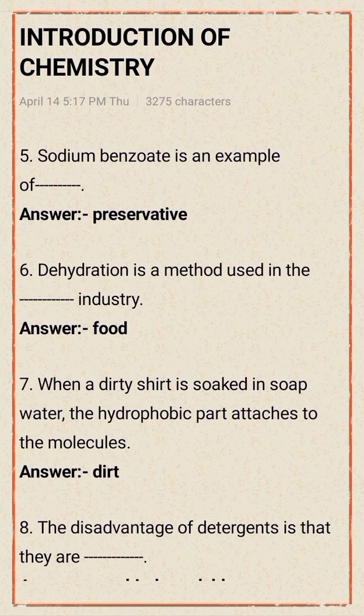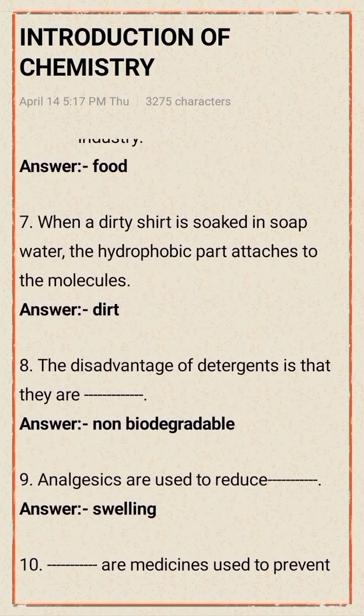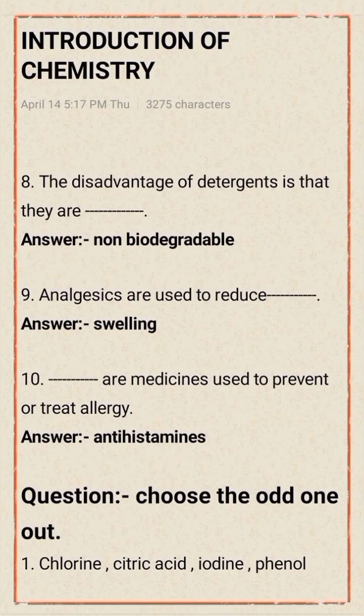Number five: sodium benzoate is an example of a preservative. Number six: dehydration is a method used in the food industry. Number seven: when a dirty shirt is washed, the hydrophobic part of the detergent molecule attaches to the dirt. Number eight: the disadvantage of detergent is that they are non-biodegradable. Number nine: analgesics are used to reduce pain and swelling. Number ten: antihistamines are medicines used to prevent or treat allergies.